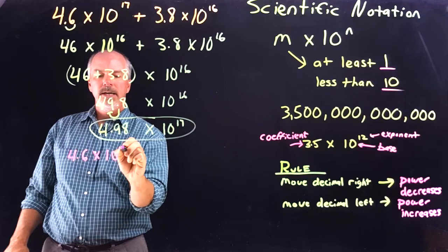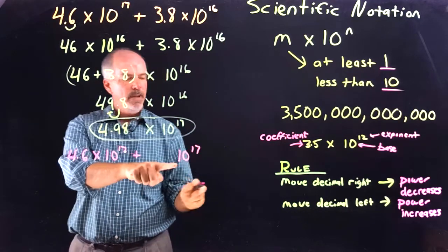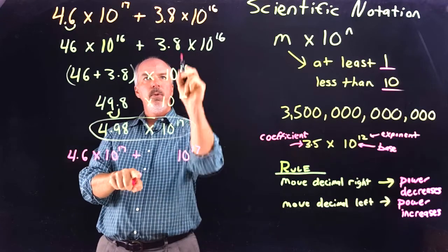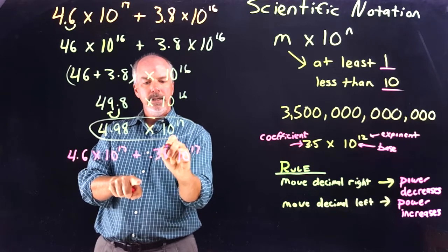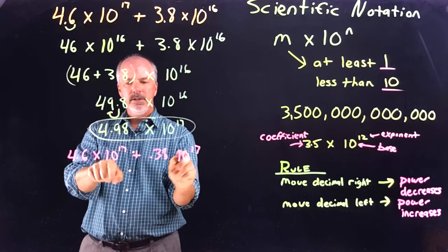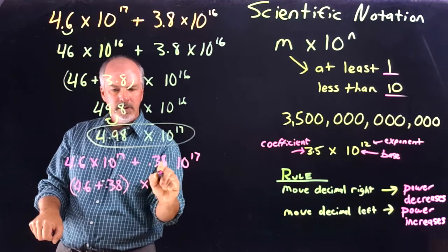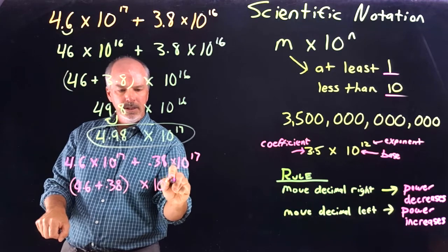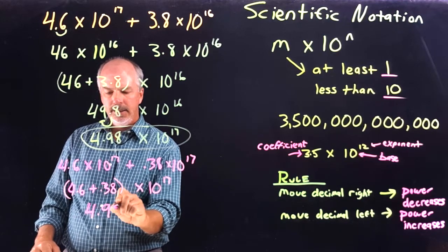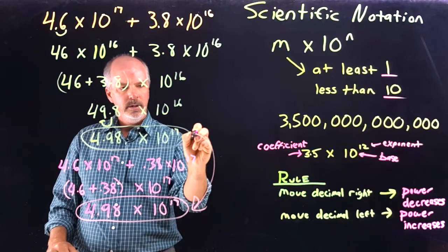Now let's do it the other way by increasing the second term. The 4.6 times 10 to the 17th stays the same, and we change 3.8 times 10 to the 16th to have 10 to the 17th. If the power increases, the decimal moves to the left, so 3.8 becomes 0.38 times 10 to the 17th. Adding 4.6 plus 0.38 gives us 4.98 times 10 to the 17th — confirming both methods give the same answer.